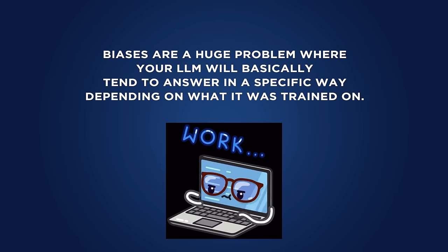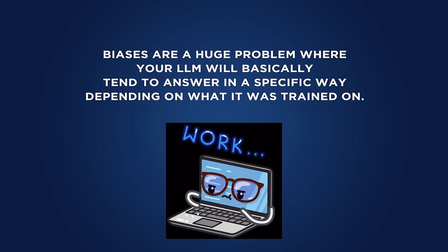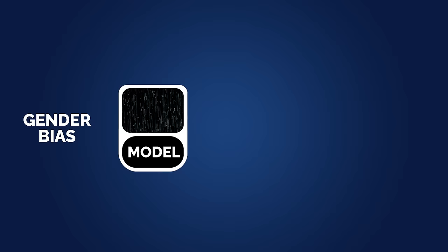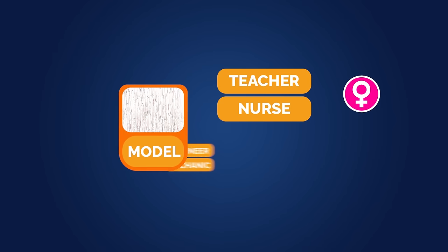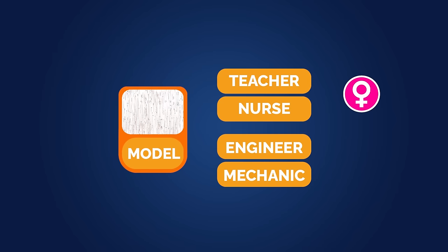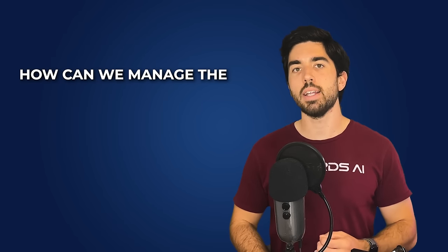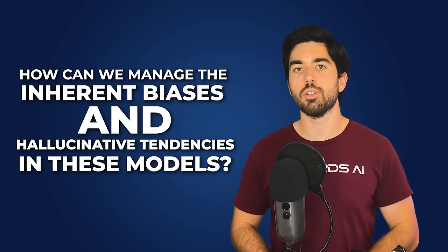Similarly, biases are a huge problem where your LLM will basically tend to answer in a specific way depending on what it was trained on. An example of bias is gender bias, where a model will likely predict teacher and nurse as a job for a woman, while it will predict engineer and mechanic for men. So the question we address today is: how can we manage the inherent biases and hallucinative tendencies of these models?